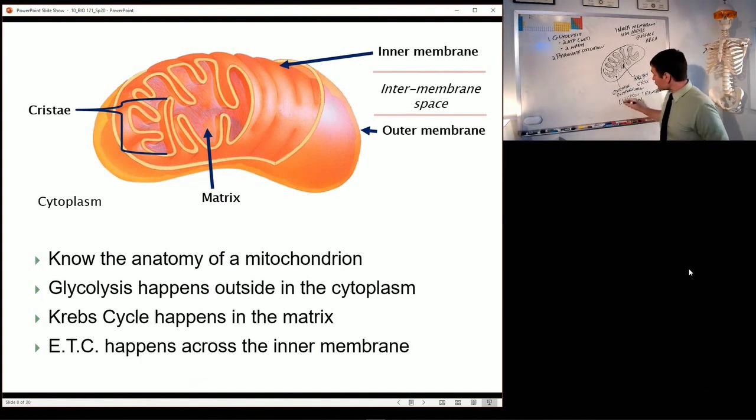We saw an electron transport chain once before. Again, in the light dependent, not to keep bringing back photosynthesis, but these are integrated concepts. The electron transport chain was that chain of enzymes and coenzymes that were passing electrons from one to the other in order to get a little bit of energy out of that electron. Same idea is going to happen right at the end of cellular respiration, and that's going to happen across the inner membrane.